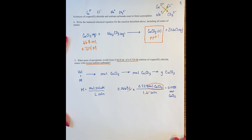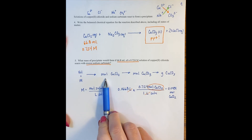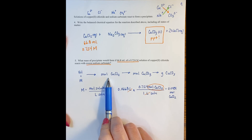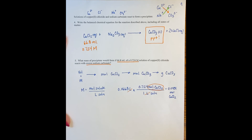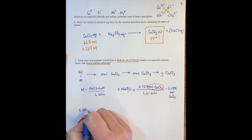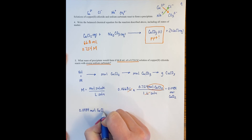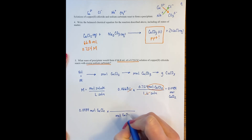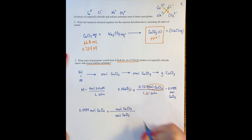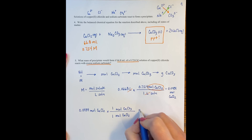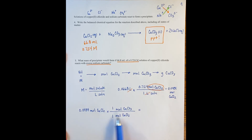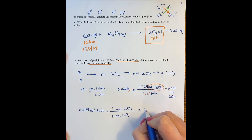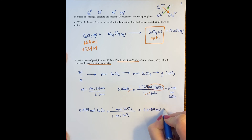So we have 0.0484 moles of copper chloride, which puts us at the next step in our strategy. Now we can convert from moles of copper chloride to moles of copper 2 carbonate using the stoichiometry from the balanced chemical equation. Taking 0.0484 moles of copper chloride times the mole ratio — 1 mole of copper 2 carbonate per 1 mole of copper 2 chloride — gives us 0.0484 moles of copper 2 carbonate.